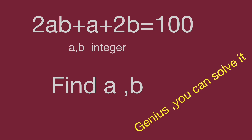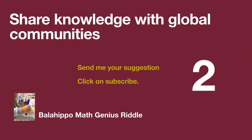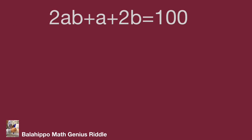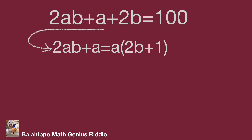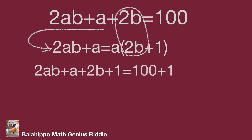Keep watching the video to see the result. At first, let's analyze the equation. I am going to adjust 2ab plus a — it becomes a multiplied by the quantity (2b plus 1). Next, try to find the connection for 2b and 1, so we add 1 to both sides of the equation. Let's simplify it.